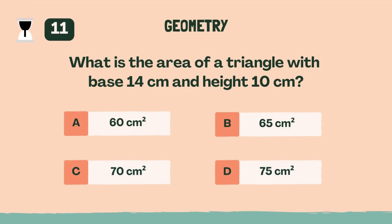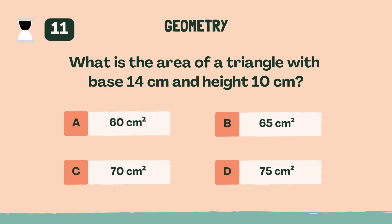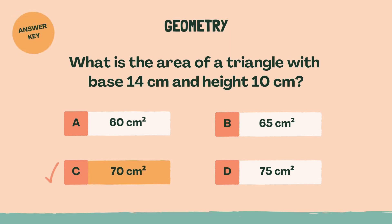What is the area of a triangle with base 14 centimeters and height 10 centimeters? C, 70 square centimeters.